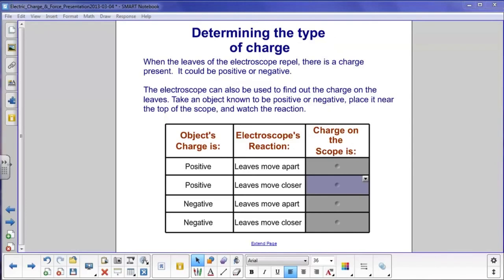When the leaves of the electroscope repel and move far apart from each other, there's a charge present. It could be either positive or negative. To find out what the charge is, you can take an object that has a known charge, either positive or negative, place it near the top of the scope, and watch what happens. For example, if you take a positively charged object, you move it near the electroscope, and the leaves move apart.